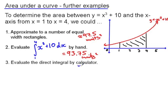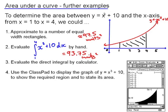Thirdly, if you have access to a CAS calculator, you should be able to input this integral and get the calculator to give an answer of 93.75. Make sure that you're able to do this on your calculator. If you have a CAS calculator, you can also use a fourth method, which is to draw a graph of the function. Once you've drawn the graph, you can go to Analysis, G-Solve, and the integral symbol. Input the lower and upper bounds of 1 and 4, and the ClassPad will sketch the area and tell you the size of that area.